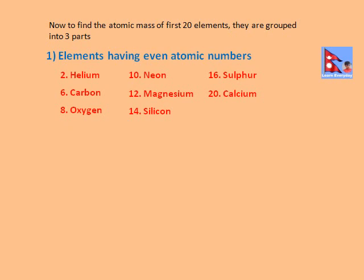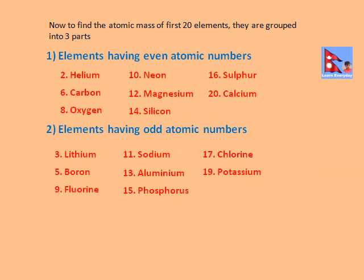Now clear with the top even. Let's see the second part. Here the elements with atomic numbers 3, 5, 9, 11, 13, 15, 17, and 19 are grouped under elements with odd atomic numbers.